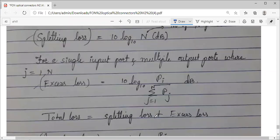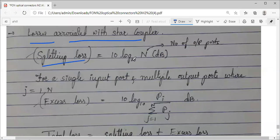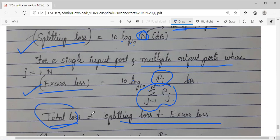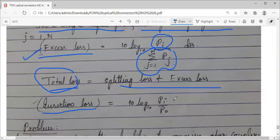Losses associated with this: just like the earlier case, there are different losses. One is splitting loss. The equation depends on 10 log base 10 N, where N indicates number of output ports. Excess loss is 10 log base 10 applied power Pi divided by summation of Pj, in terms of dB. Total loss is sum of splitting loss and excess loss, and insertion loss is input by output.